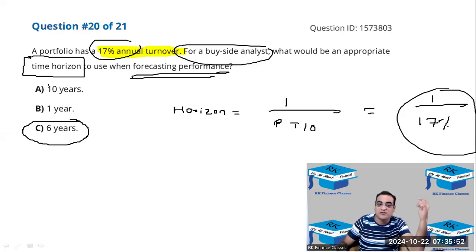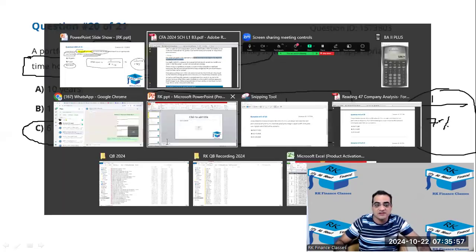So take a note of this formula: buy side analyst horizon equals one upon portfolio turnover. It was there in this 40.e.